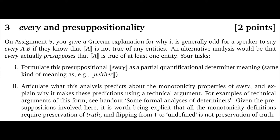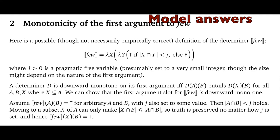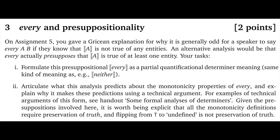For examples of technical arguments of this form, see the handout 'Some Formal Analyses of Determiners'. The relevant arguments there are the ones that diagnose monotonicity properties of determiners, which is something that you've done all throughout the quarter essentially. Here's the new piece: given the presuppositions involved here, it's worth being explicit that all of the monotonicity definitions require preservation of truth, and flipping from true to undefined is not preservation of truth.